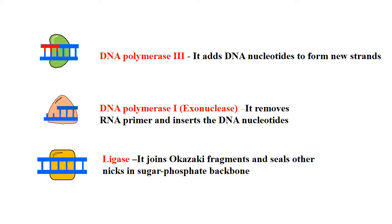Then we have DNA polymerase 1, which removes the primer — because after the new strand has been formed, the RNA primer has to be removed and the correct DNA bases are inserted. And finally we have DNA ligase, which joins the Okazaki fragments that were discussed in the previous video, to form a continuous sugar-phosphate backbone of the DNA.